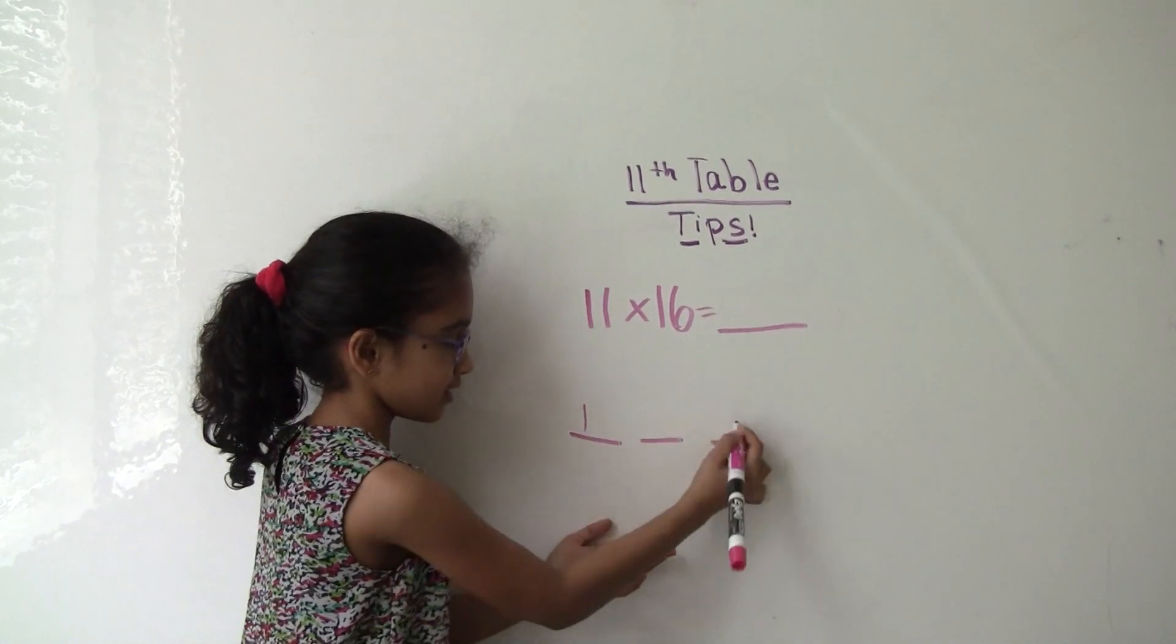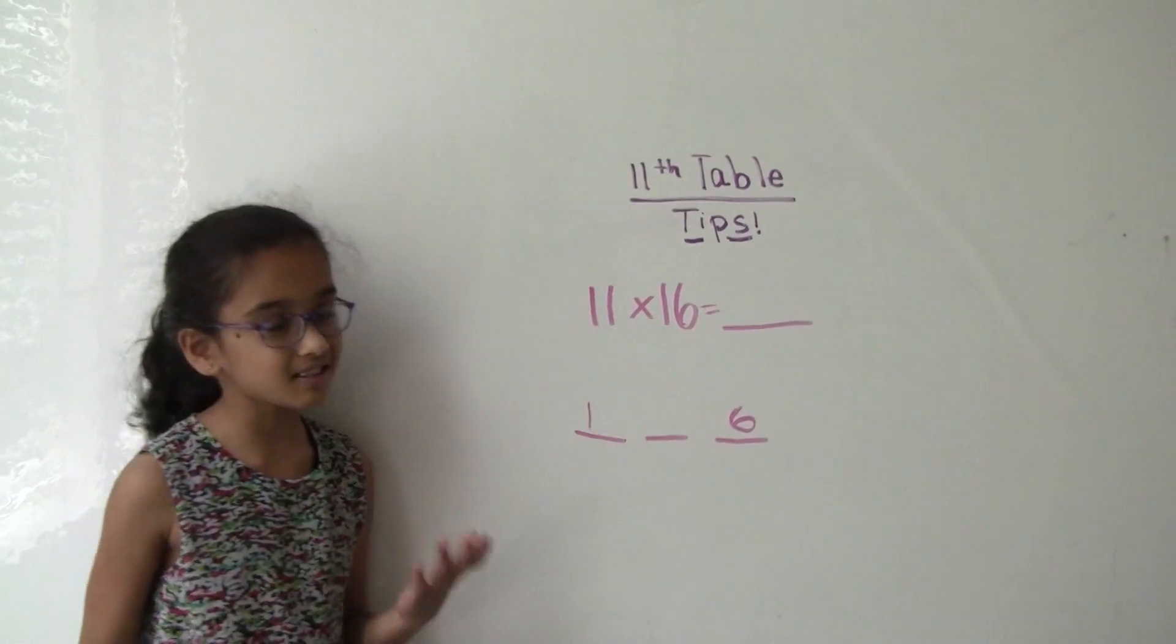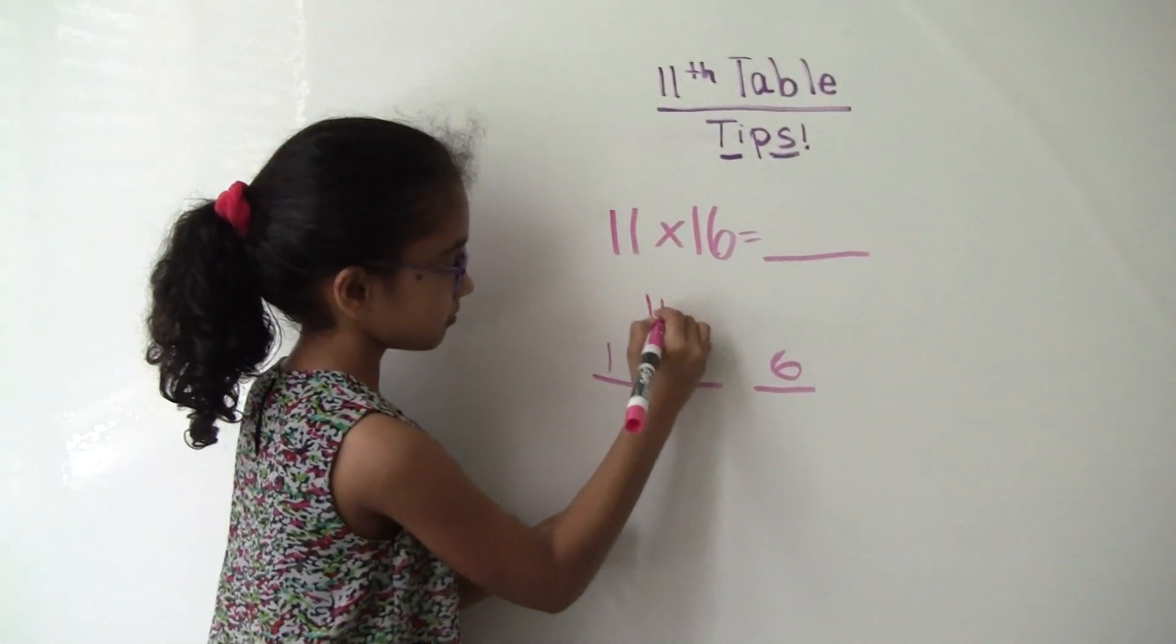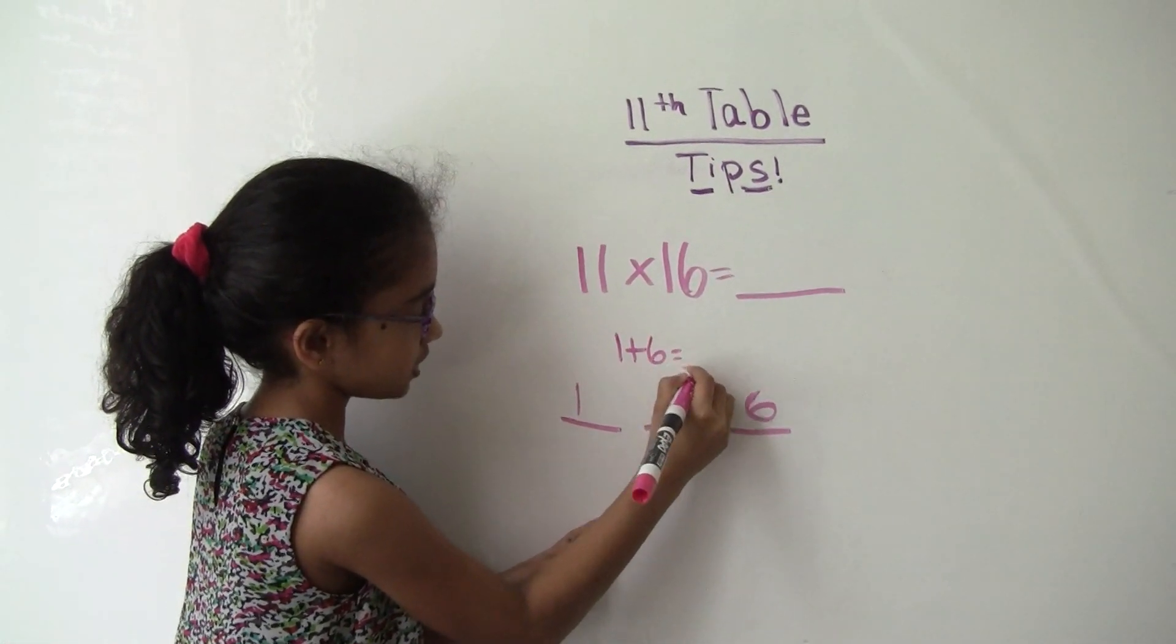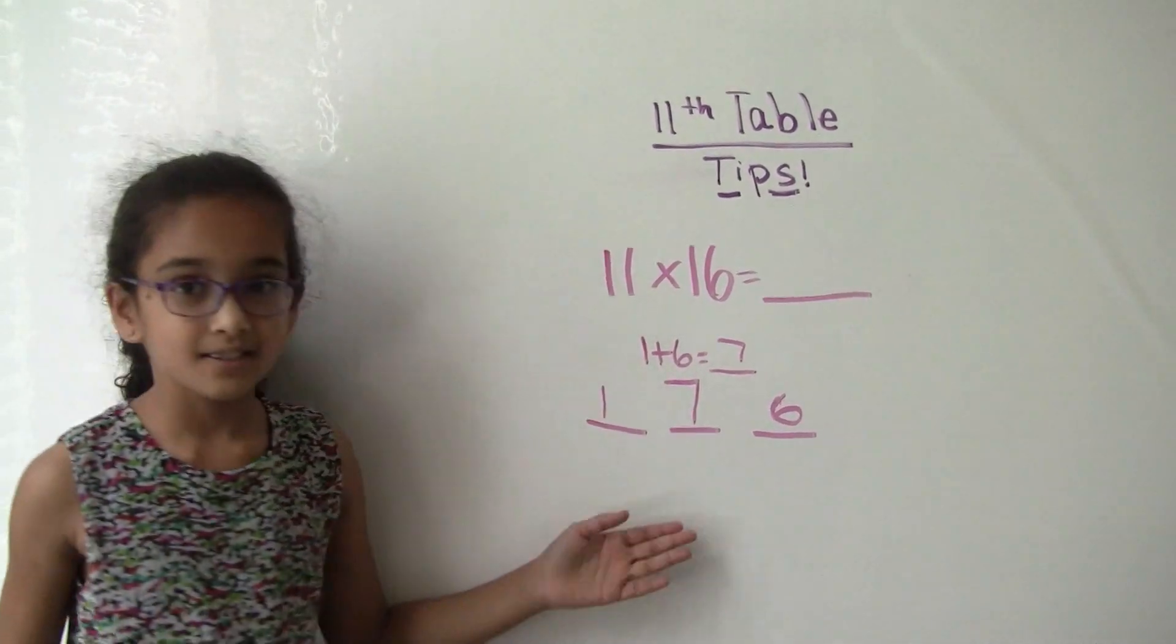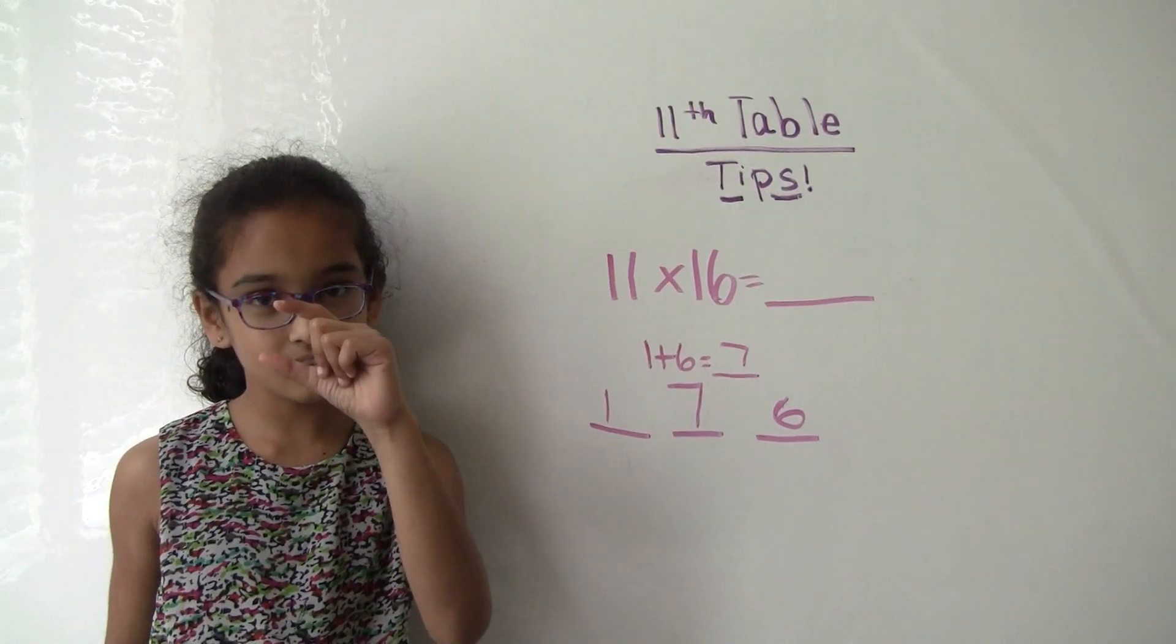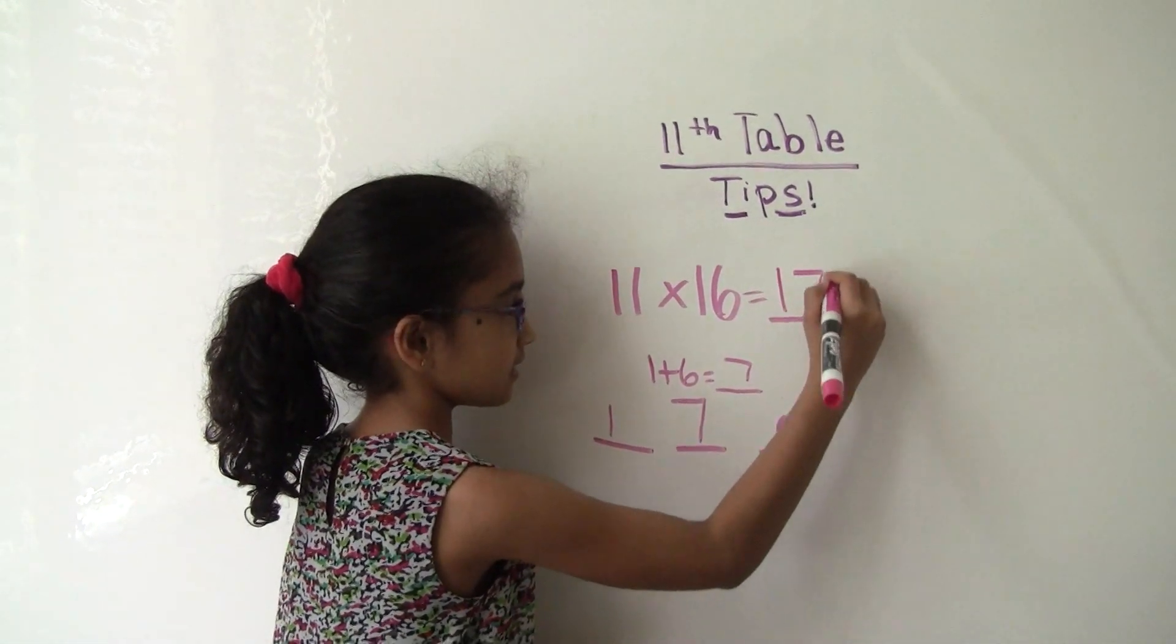Put 1 and 6 in here. 1 is now in your hundreds place and 6 is still in your ones. Next, add 1 plus 6, which equals 7. So put 7 here. See how we solved that in this many seconds? So your answer again is 176.